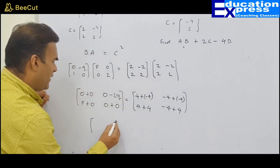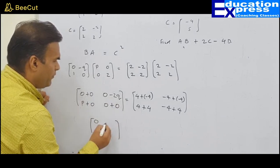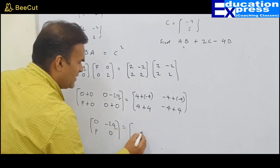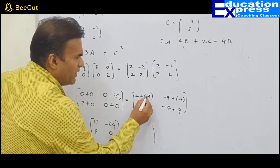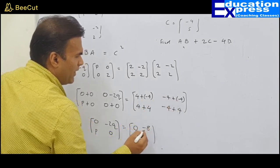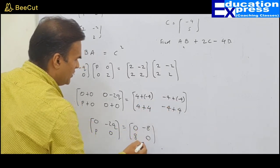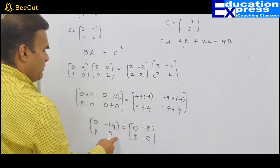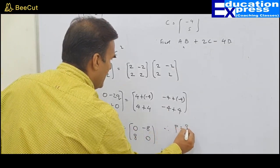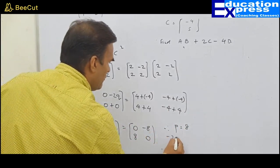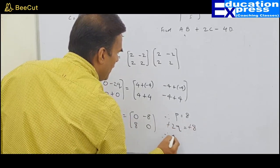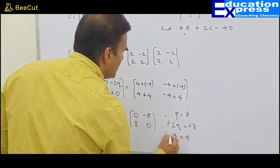When you compare: 0, minus 2Q, P, 0 is equal to 4 plus minus 4 which is 0; minus 4 plus minus 4 which is minus 8; 8; and 0. Comparing: P equals 8. Minus 2Q equals minus 8, therefore Q equals 4.